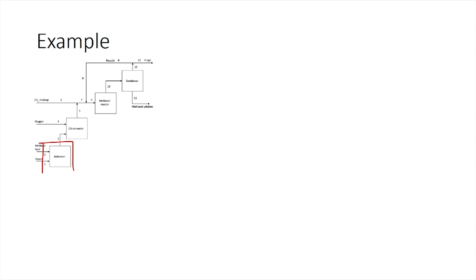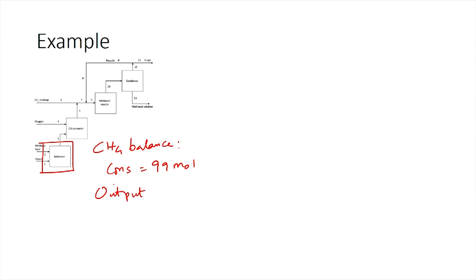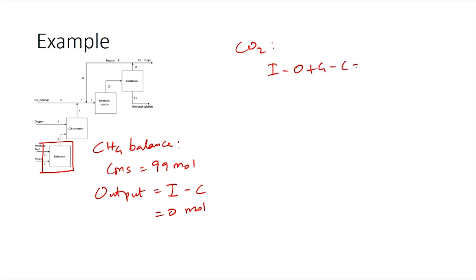To find stream 3, we choose the reformer as the system and perform material balance calculations. For the methane balance, 100 percent of methane is consumed, so 99 moles are consumed and the output of methane in stream 3 is 0 moles. For the carbon dioxide balance at steady state, output equals generation. We are told 90 percent of methane consumed produces CO2.